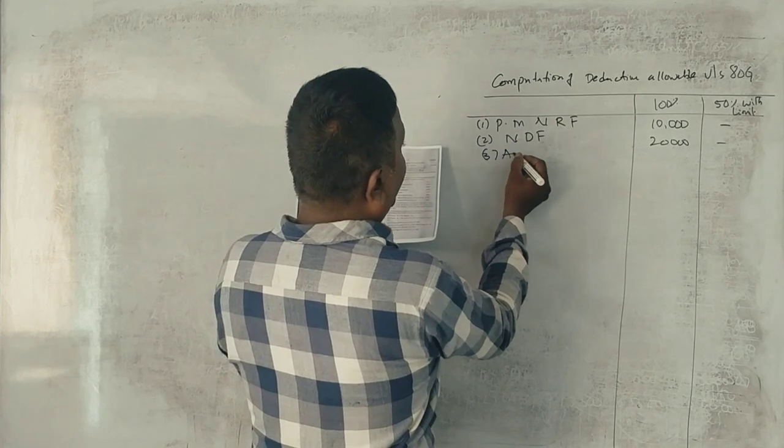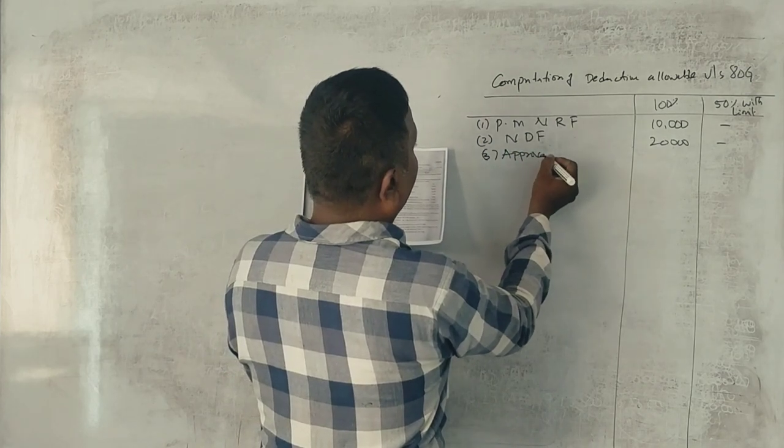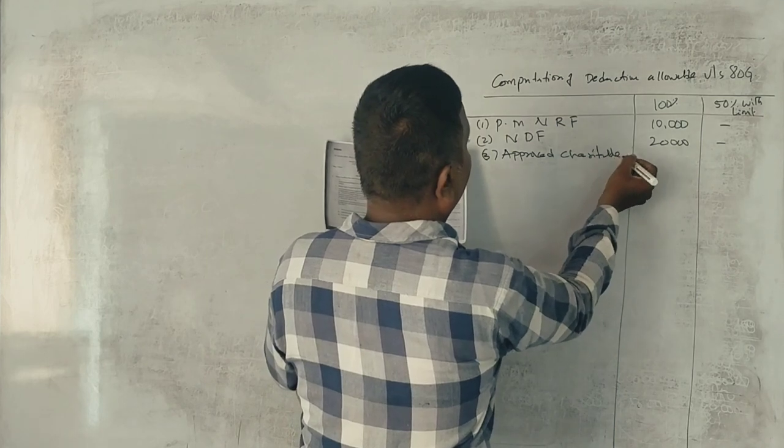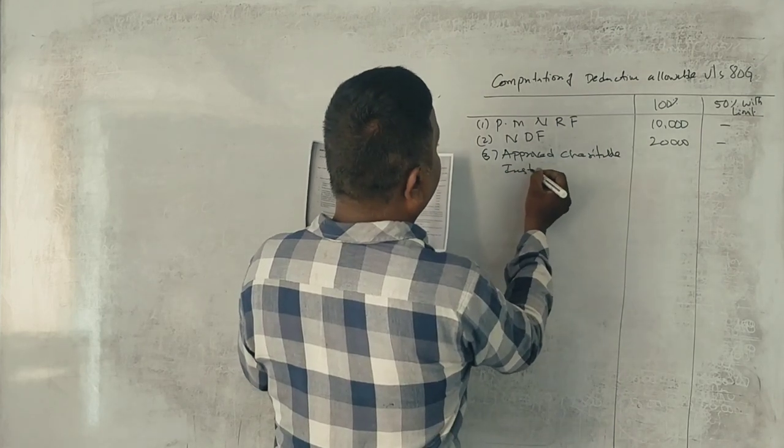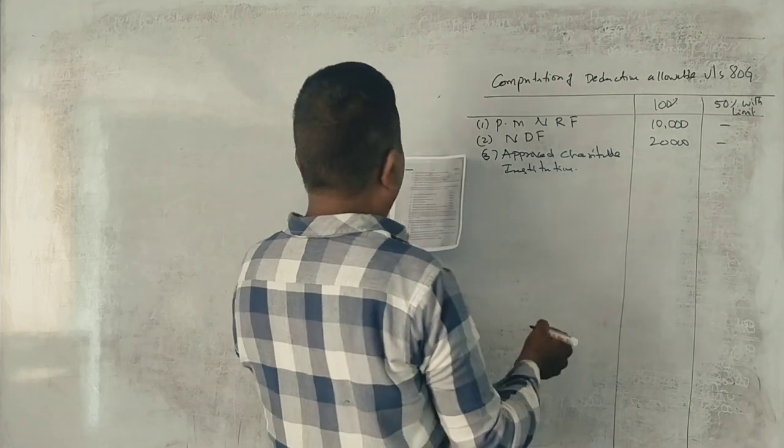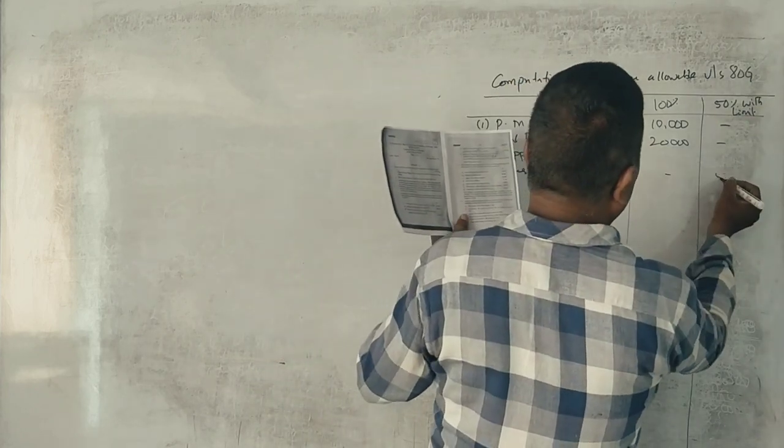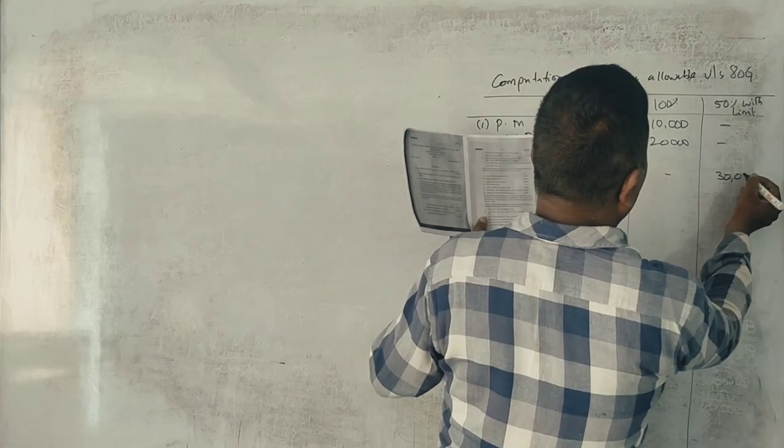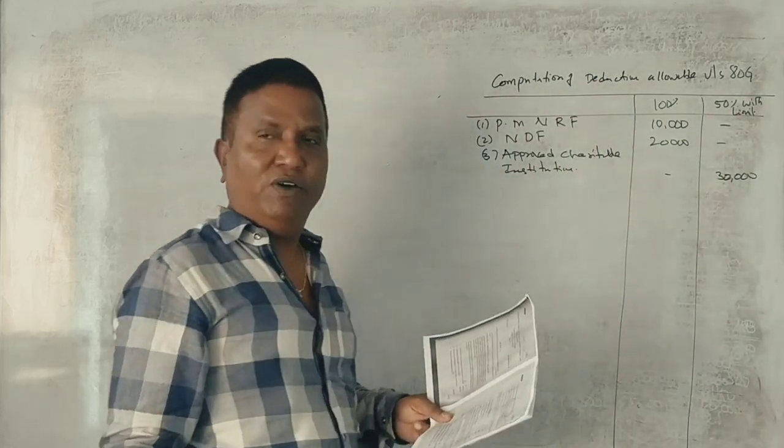And third, approved charitable institution. This includes 50% applicable. And now, the amount is 50,000 rupees. It's 30,000, first one.